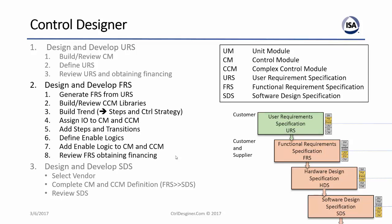Let's continue with segment 3, which covers how to go from URS to FRS, and this concludes the webinar. To generate FRS from URS, we need to build and review the CCM library, build a trend, assign IO to CM and CCM, add steps and transitions, define enable logic, and add enable logics to the CM and CCM placeholders.